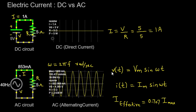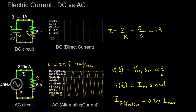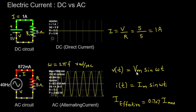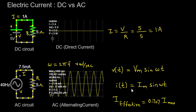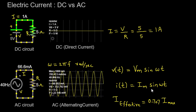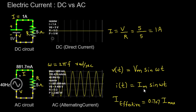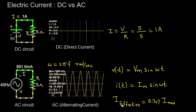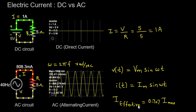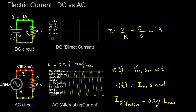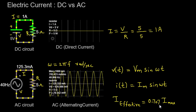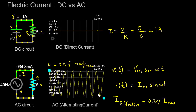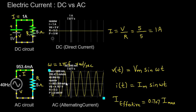To describe the voltage across the resistor at any given time T, we use the equation V(T) = Vm sin(ωT), where Vm represents the peak voltage. Similarly, the current flowing through the circuit can be expressed as I(T) = Vm sin(ωT), where Vm represents the peak current. When discussing AC circuits, we often refer to the effective or RMS (root mean square) value of the current, denoted as I_effective, which is approximately equal to 0.707 times the maximum current Imax.